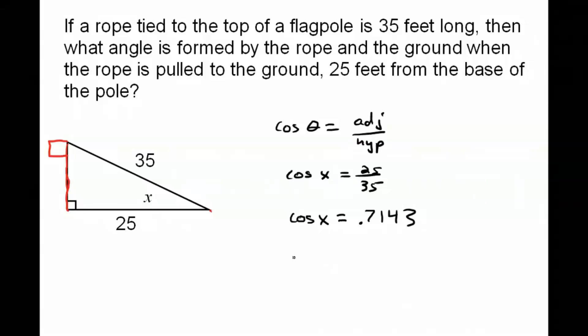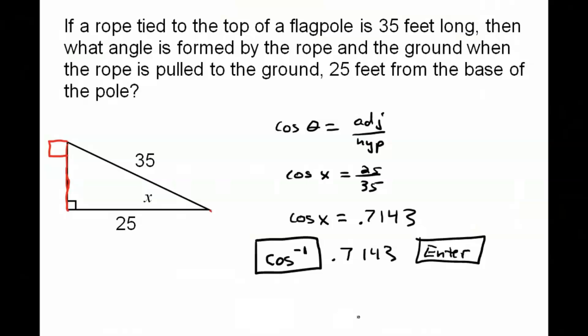Now to find that, as I've told you before, you have to use what I call the Jeopardy button. That's the cosine inverse button on your calculator. It's usually the second function of the cosine button. All right, so if I push that button and then put in my 0.7143 and then hit enter, it will give me the actual degree measurement.